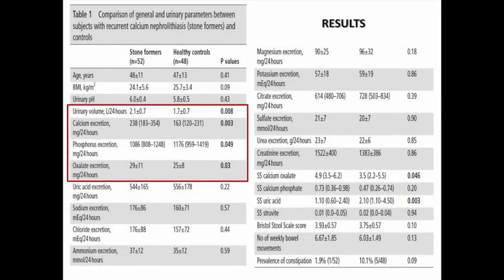We found that stone formers were very similar for clinical and nutritional parameters, except for urinary excretion of calcium and oxalate, which were higher in stone formers, and dietary intake of calcium, which was higher in controls. All these differences were highly expected given previous investigations.